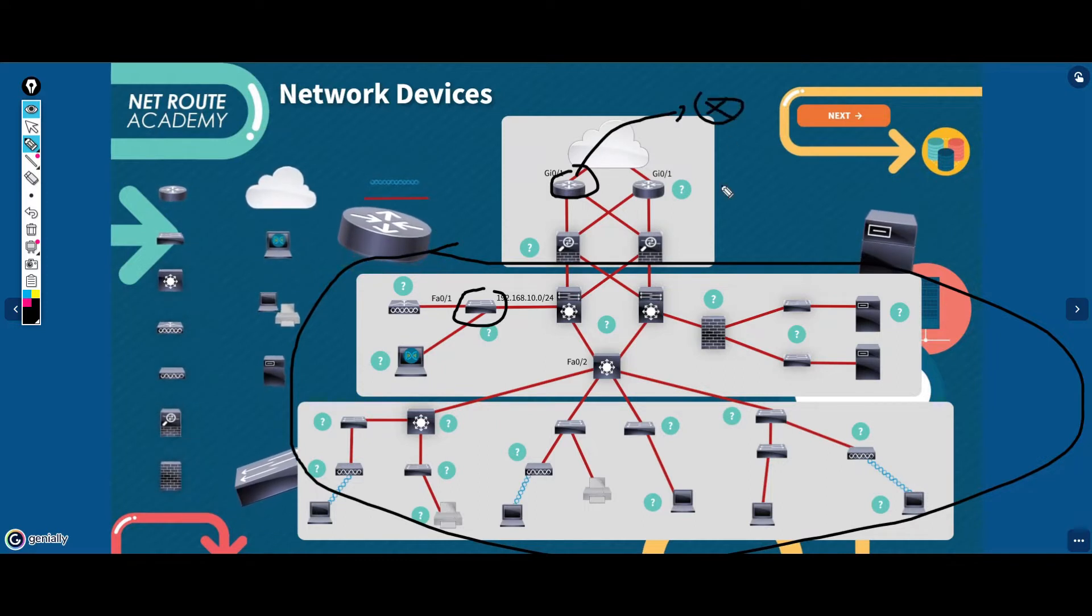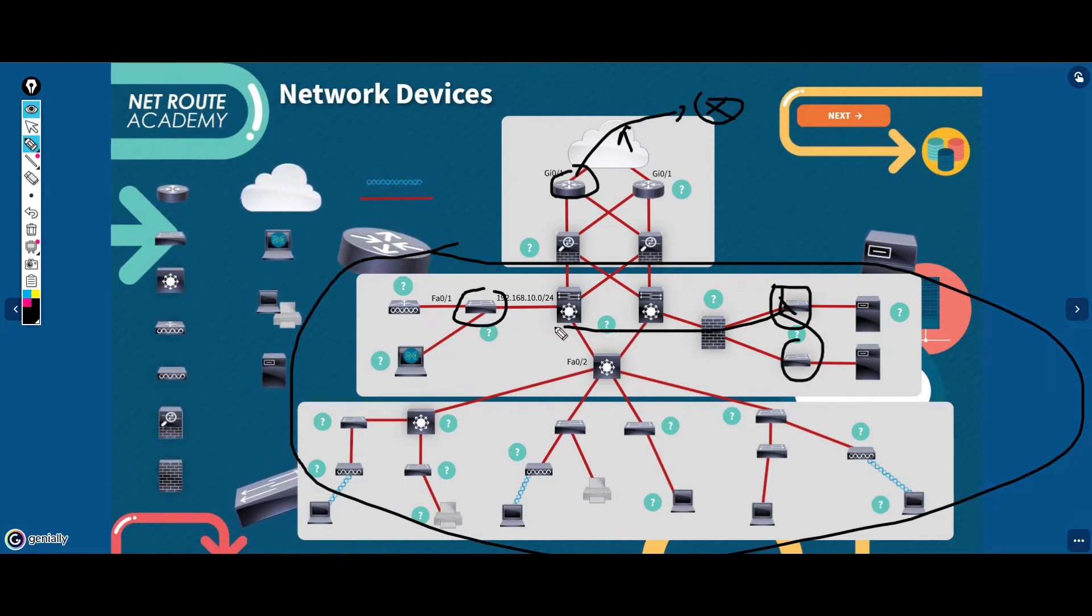The router acts as a gateway between multiple networks, but a switch, even if there are multiple switches, can only communicate within a single network.